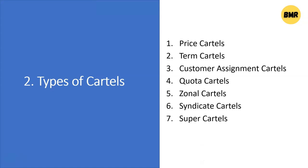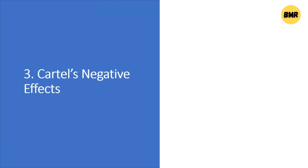Number seven: super cartels. These are international collaborations at the highest level. Cartels in the home country collaborate with cartels in another country — so this involves collaboration between two countries, your own country and some other country. This is what we call super cartels.